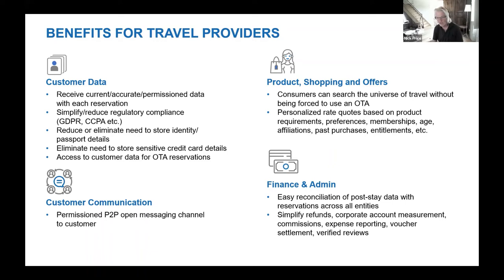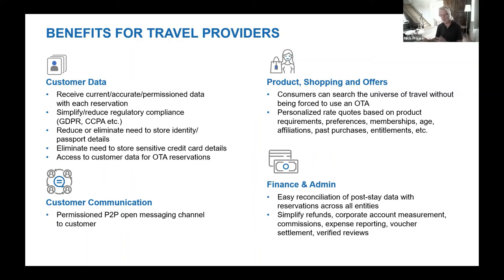On product shopping and offers: consumers can search the universe of travel without being forced to use an OTA. They can receive personalized rate quotes based on product requirements they provide — a hotel with a gym, a hotel with a high floor, vegetarian meals — but also based on attributes such as memberships, age, affiliations. For example: I'm a member of the Hilton loyalty program, I'm now shopping at a Hyatt, and you should recognize that I'm high tier in Hilton and give me some benefits for that recognition.